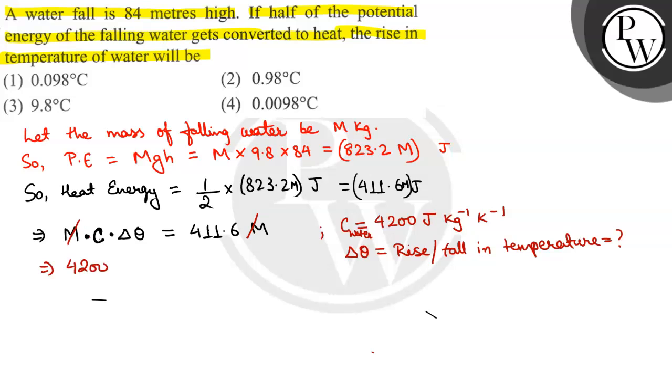So, here we have delta theta value. This is 411.6 divided by 4200. And this value is 0.098. Now, we have 0.098 Kelvin or Celsius. Because rise in temperature, Kelvin or degree Celsius, are the same.